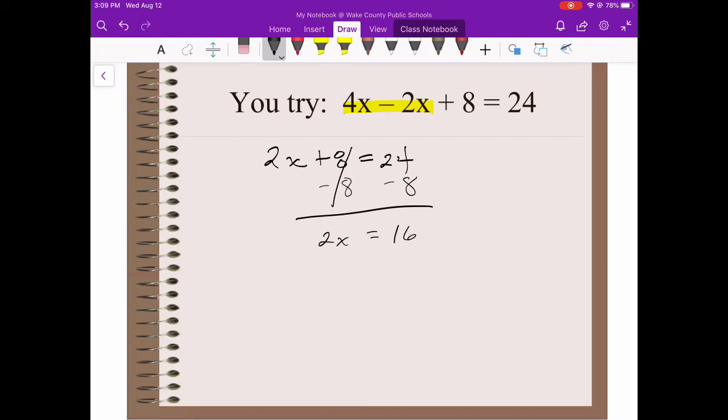2x is now equal to 24 minus 8 or 16. 2x is not quite x by itself, so I need to get rid of that 2. 2x means multiply. How do I un-multiply? I divide. I'm going to make sure I divide both sides by 2. The 2's cancel out because 2 divided by 2 is 1. x is equal to 8, and now we've solved for x.